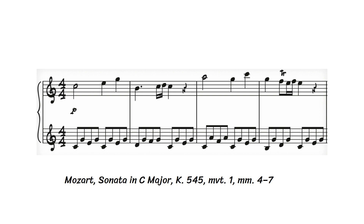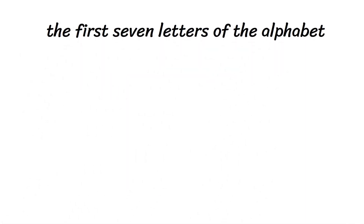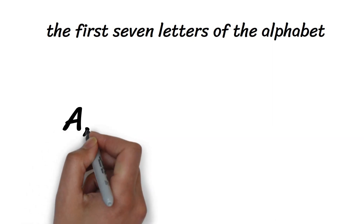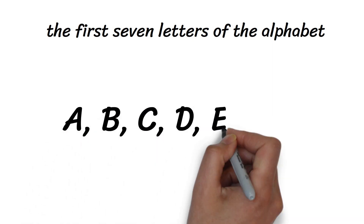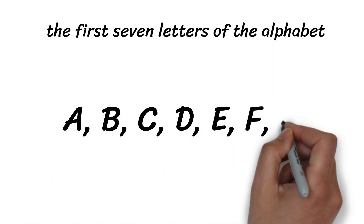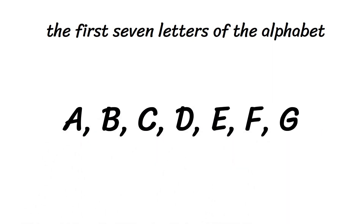The first piece of information you need is that musical notes are named with the first seven letters of the alphabet — A, B, C, D, E, F, G — repeated endlessly.